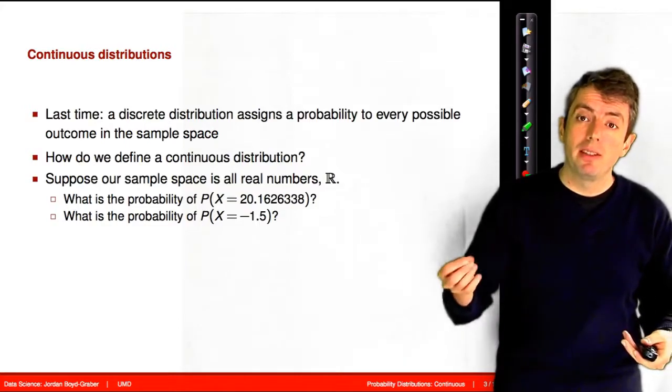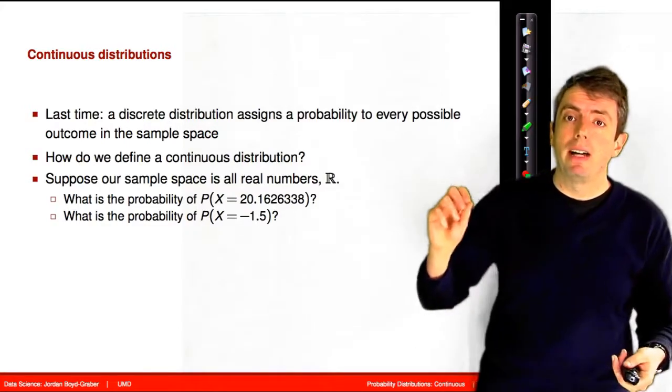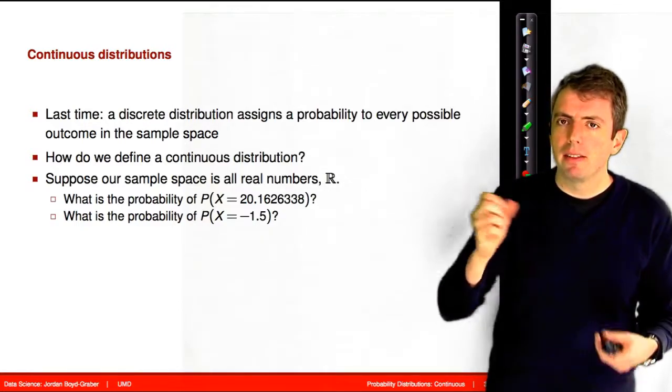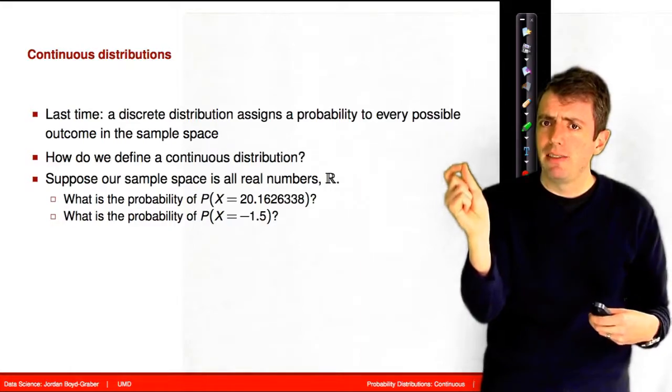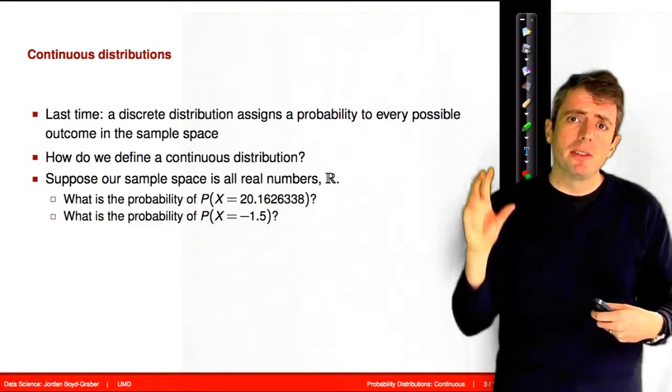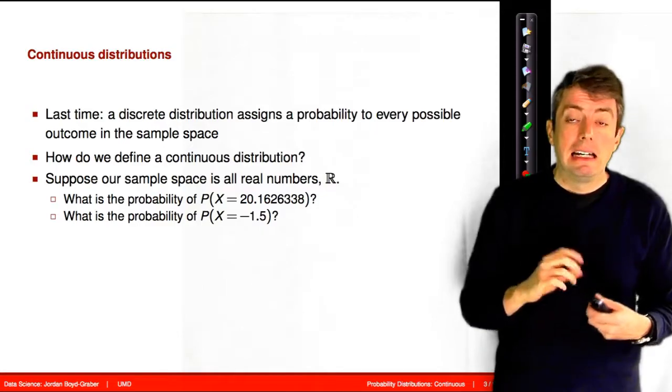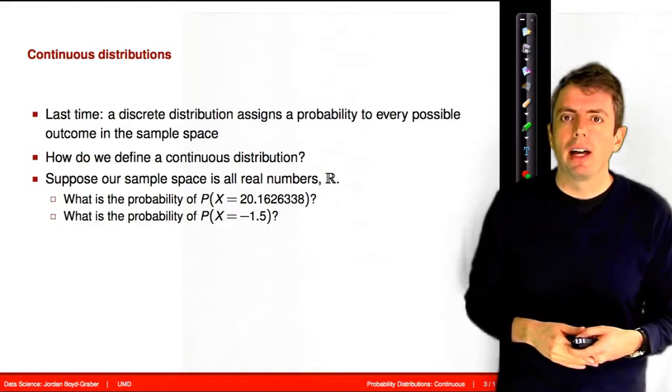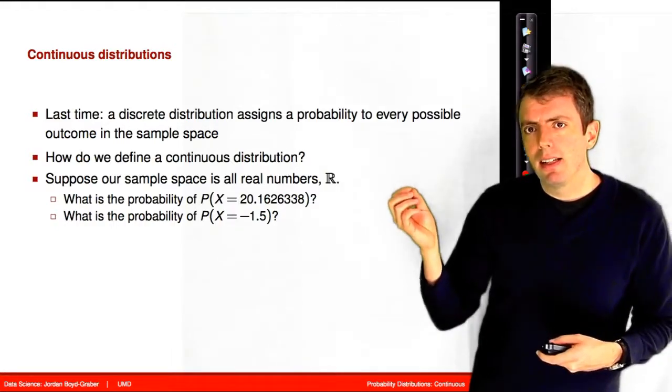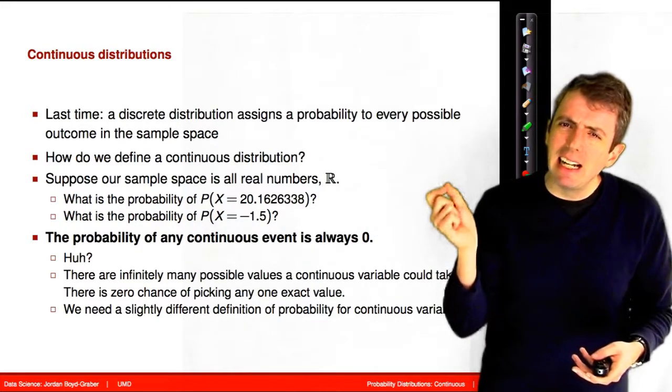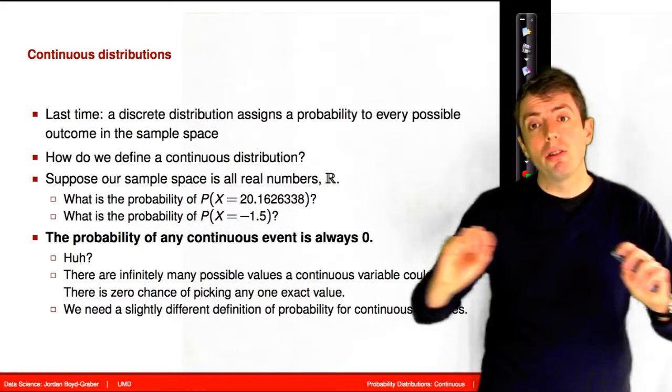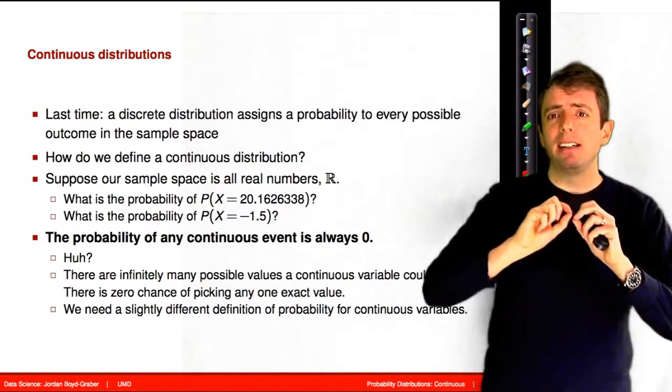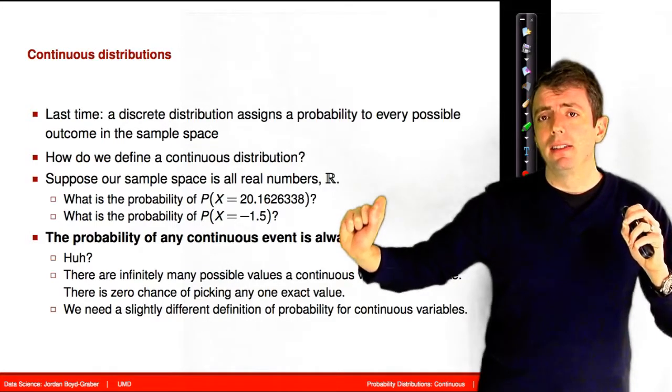And so if you ask questions like, what is the probability of getting 12.5742, that doesn't make a lot of sense because there are infinitely many possible outcomes, and the probability of any single decimal point expansion is going to be vanishingly small. In fact, you can mathematically prove that it's going to be 0, although we won't do that in this class. And this doesn't make a lot of sense. The probability of any outcome is 0. It's just that there are so many outcomes that the probability of exactly landing on an infinitely long decimal expansion is 0.